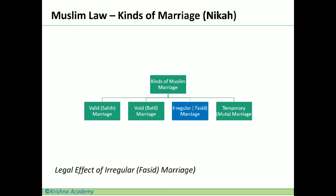Irregular or fasid marriage is an incomplete marriage where deviation from procedures or law can be removed, allowing it to become a valid marriage. For example, marriage with a fifth wife is an irregular or fasid marriage. Similarly, marriage with a woman who is observing her iddat period is also an irregular or fasid marriage.